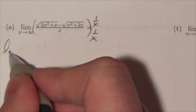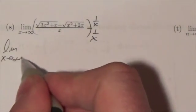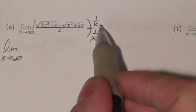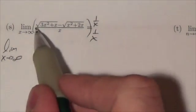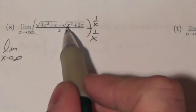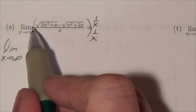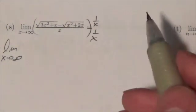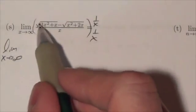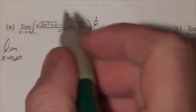So now this is going to equal the limit as x approaches infinity of, now this 1 over x is going to distribute to both of those radicals. And my next step is going to be to get that inside the radical. Now to do that, to get something inside a square root, I need to square it.